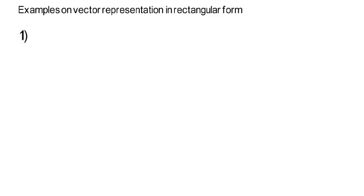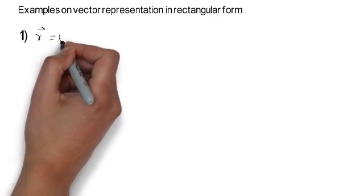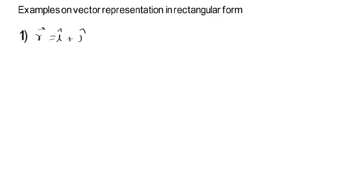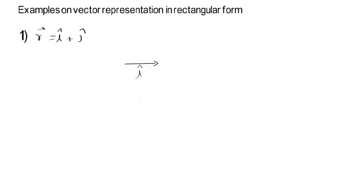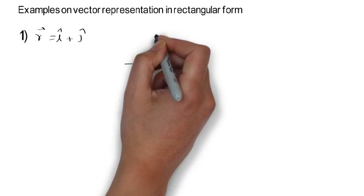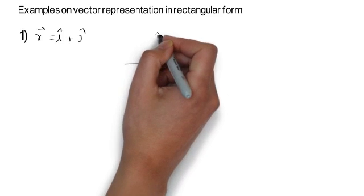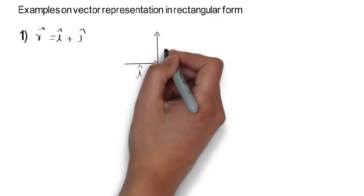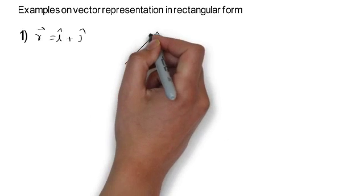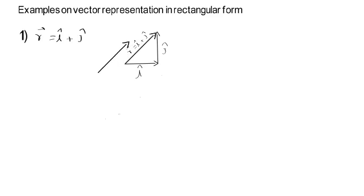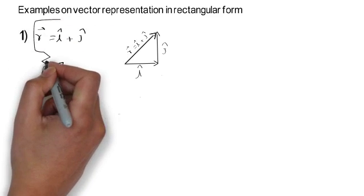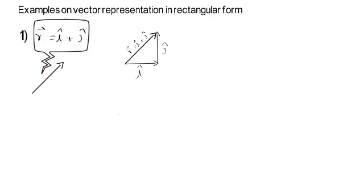The first example: R vector is equal to î + ĵ, where R is the position of any particle. We first move î in the direction of the X axis, then move ĵ in the direction of the Y axis. Our final position from the starting point is the vector î + ĵ — that is R vector.